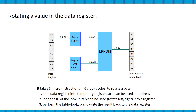This is an example of how MyForth implements bit rotation. It takes three micro-instructions to rotate a byte. First, load the data register into a temporary register so it can be used as an address. Second, load the ID of the lookup table to be used into a register. Third, perform the table lookup and write the result back to the data register.